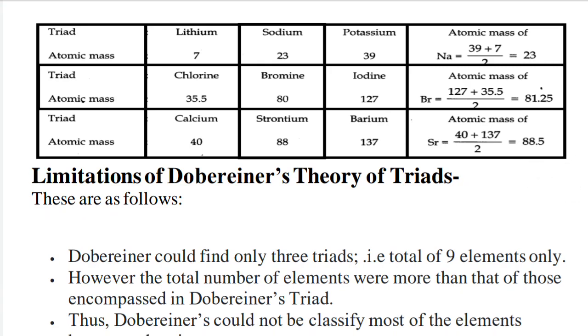A third example: Calcium (40), Strontium (88), and Barium (137). The mean of Calcium and Barium is 88.5, which is close to Strontium's atomic mass of 88. This was Dobereiner's Theory of Triads. Now let us look at its limitations.